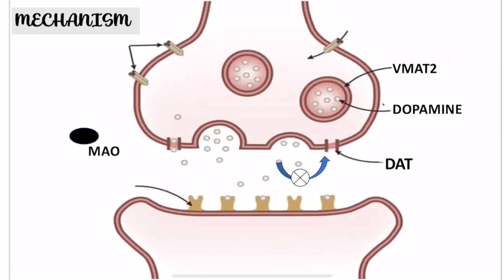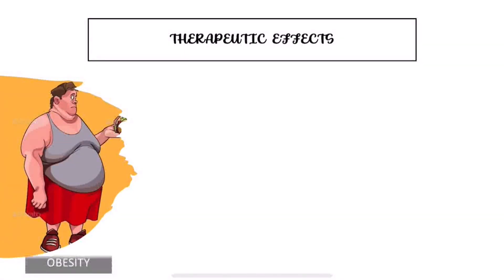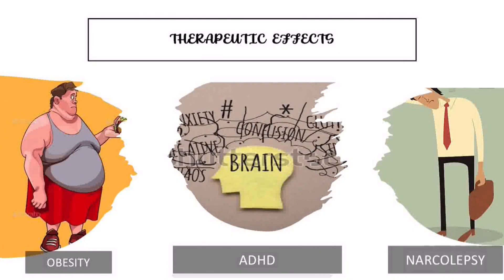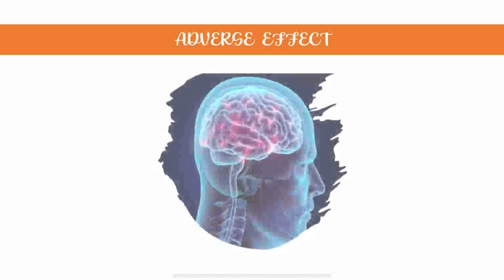Amphetamine also acts as a MAO inhibitor, preventing the metabolism of dopamine. Therapeutic effects include: ADHD — Attention Deficit Hyperactivity Disorder, a condition in which people can seem restless. Narcolepsy — a chronic sleep disorder in which a person can suddenly feel an attack of sleep. Obesity — Amphetamine works in the brain to reduce appetite and treat obesity.